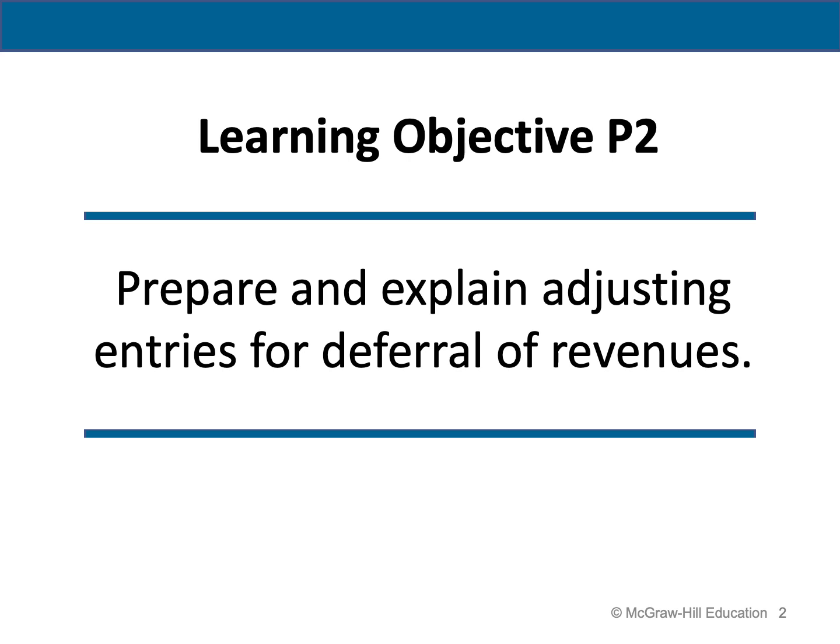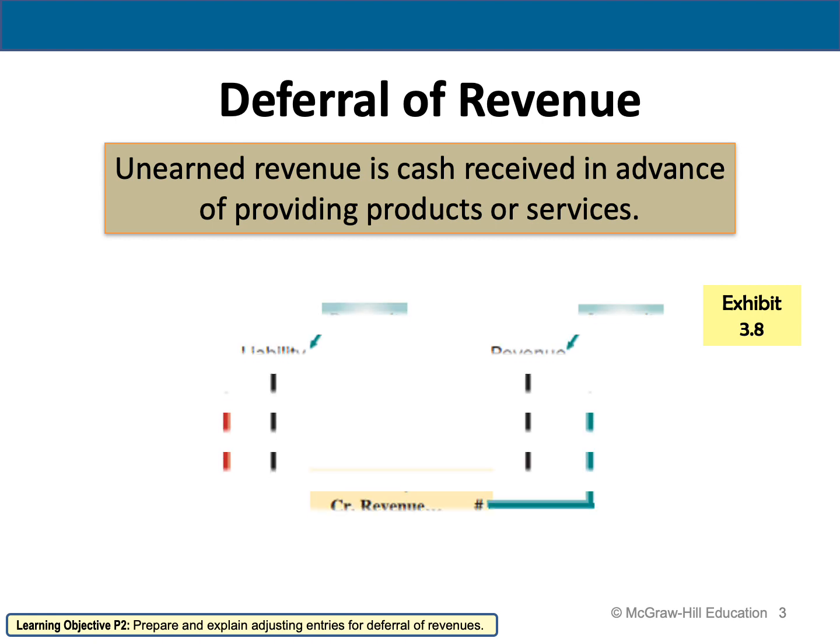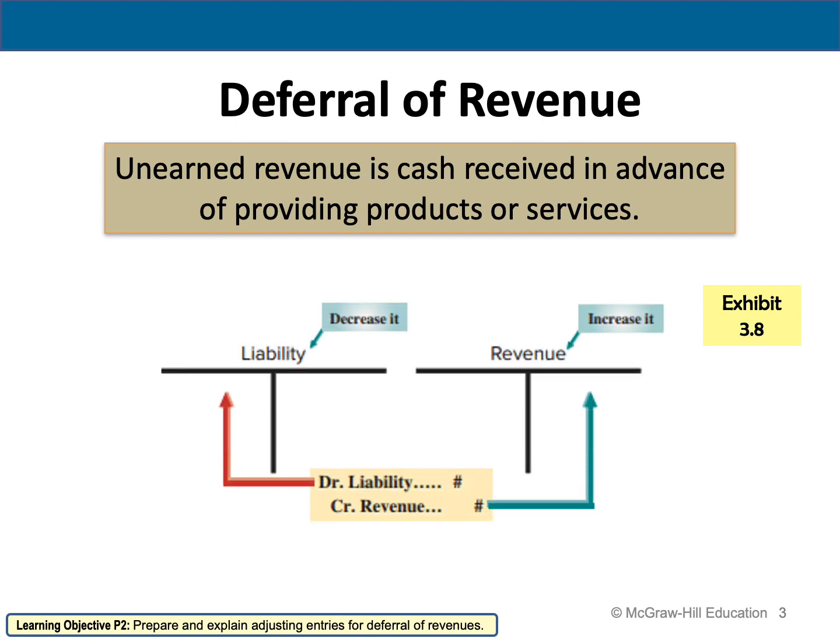The third learning objective is to prepare and explain adjusting entries for deferral of revenues. If you remember in Chapter 2, we talked about unearned revenue, which means that we receive the cash before providing the service. If we receive the cash but the service is not completed yet, we record it as unearned revenue. Remember, unearned revenue is a liability because we received the cash but now we have a liability to complete the service first and then record it as revenue.